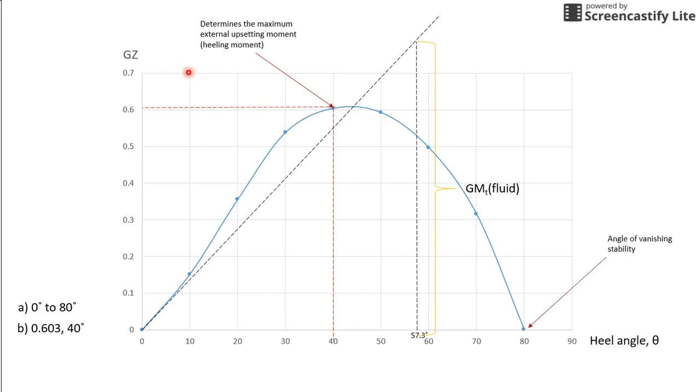And the next point is the angle of vanishing stability. This is the angle where the range of stability is. So, from the origin to the angle of vanishing stability will be where your is also called as the range of stability.